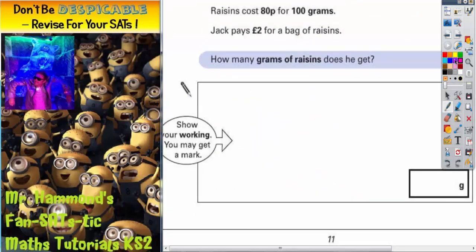Scrolling down for the next part of the question, it says that raisins cost 80p for 100 grams. Jack pays £2 for a bag of raisins.